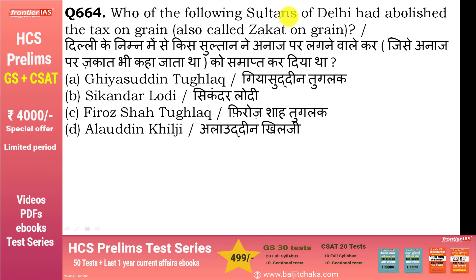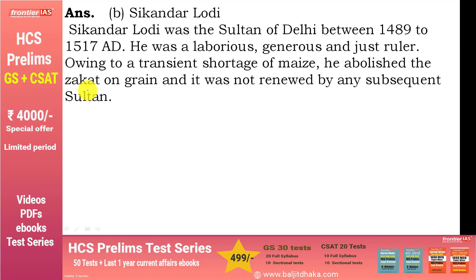Which Sultan of Delhi abolished the tax on grain (zakat on grain)? Correct answer option B — सिकंदर लोदी. हुआ यूँ कि अनाज की shortage हो गई, तो इस shortage को देखते हुए इन्होंने grain के ऊपर zakat खत्म कर दी. उसके बाद किसी भी सुल्तान ने दिल्ली में अनाज पर जकात नहीं लगाई.